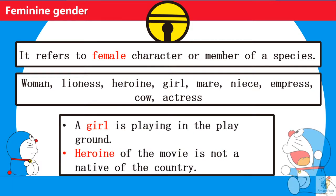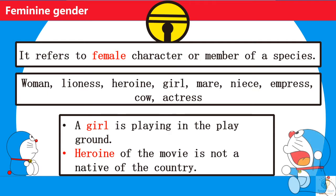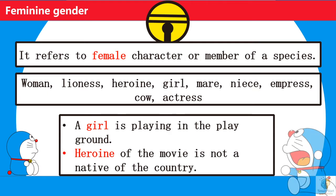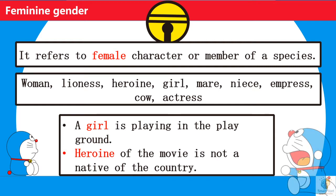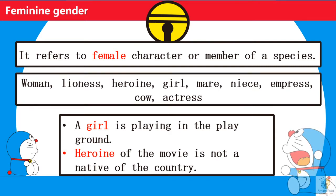A girl is playing in the playground. Here, girl is Feminine Gender. Heroine of the movie is not native of the country. Here, heroine is Feminine Gender.